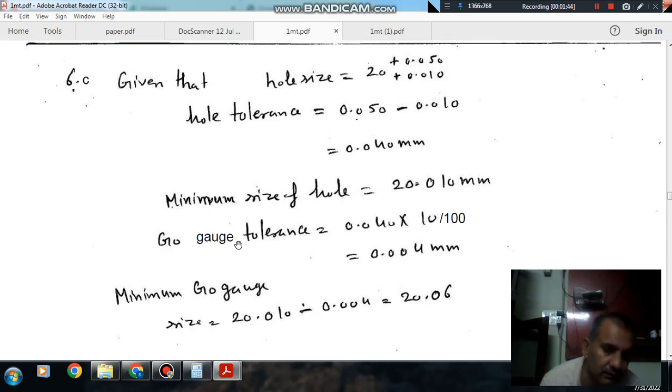Go gauge, we'll take one by one. Go gauge tolerance will be... that will be 0.004mm. For Go gauge, tolerance will be 0.004mm.